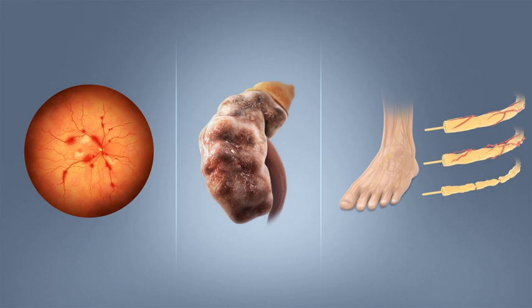The goal of treatment is an HbA1c level of 6.5%, but should not be lower than that, and may be set higher. Attention is also paid to other health problems that may accelerate the negative effects of diabetes, including smoking, elevated cholesterol levels, obesity, high blood pressure, and lack of regular exercise. Specialized footwear is widely used to reduce the risk of ulceration or re-ulceration in at-risk diabetic feet.